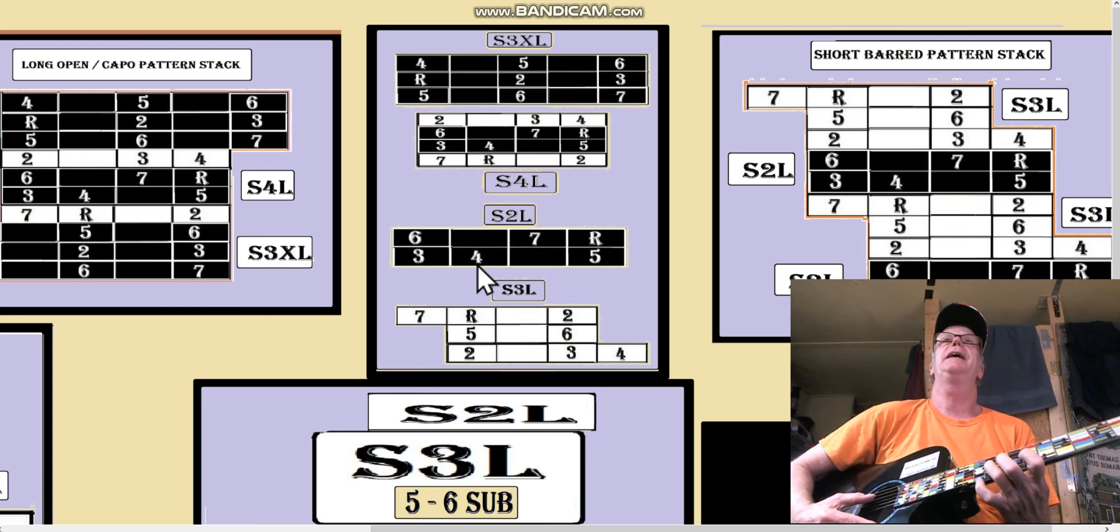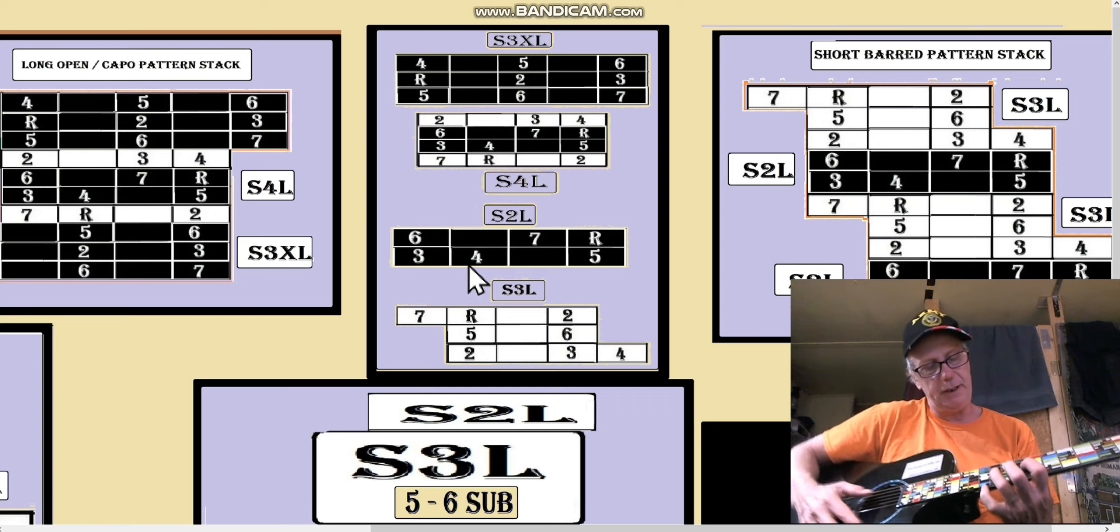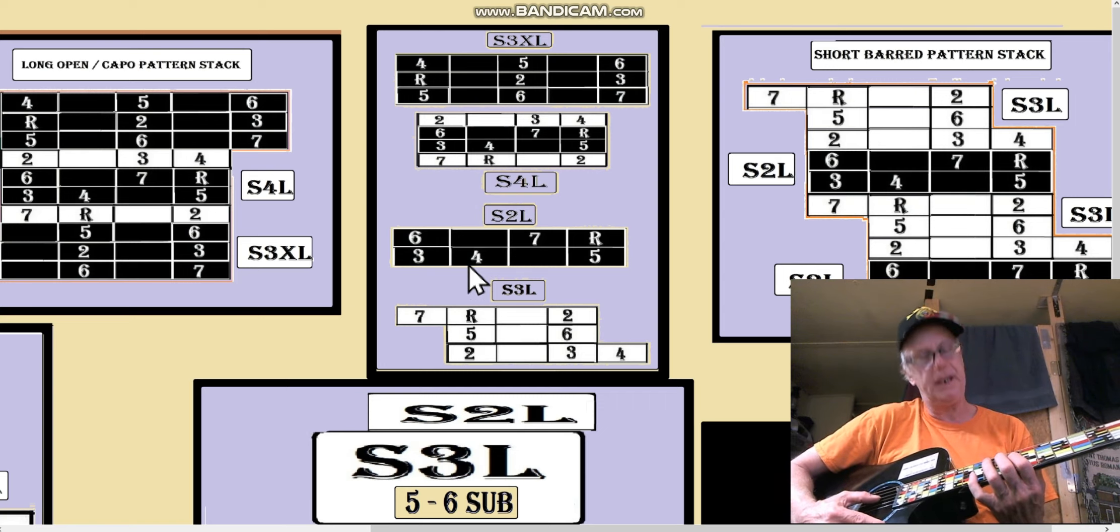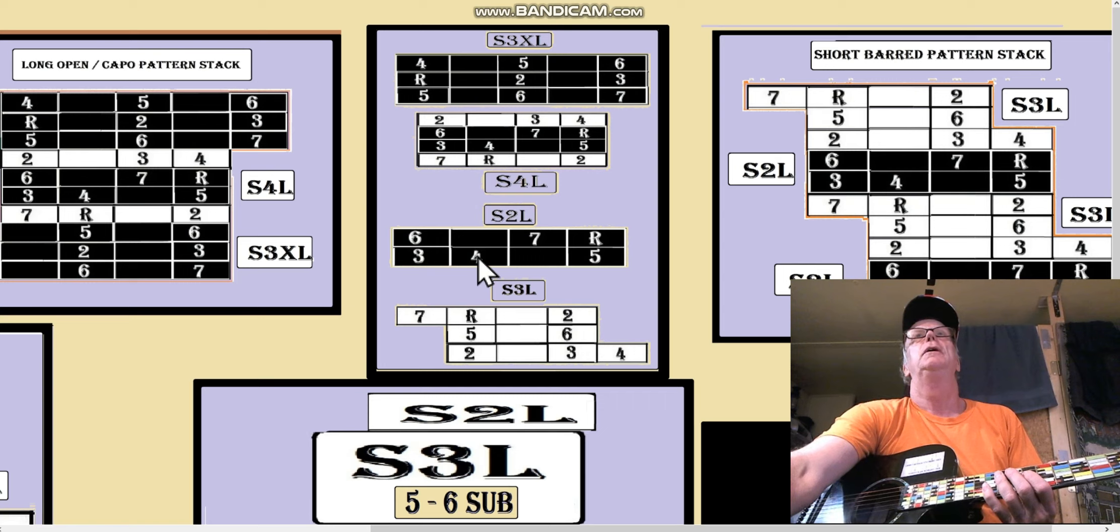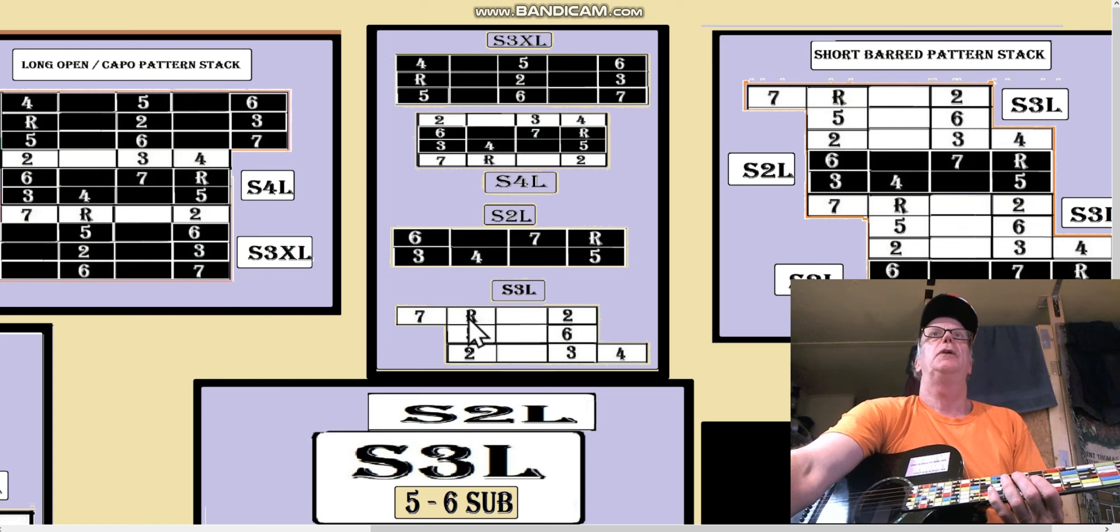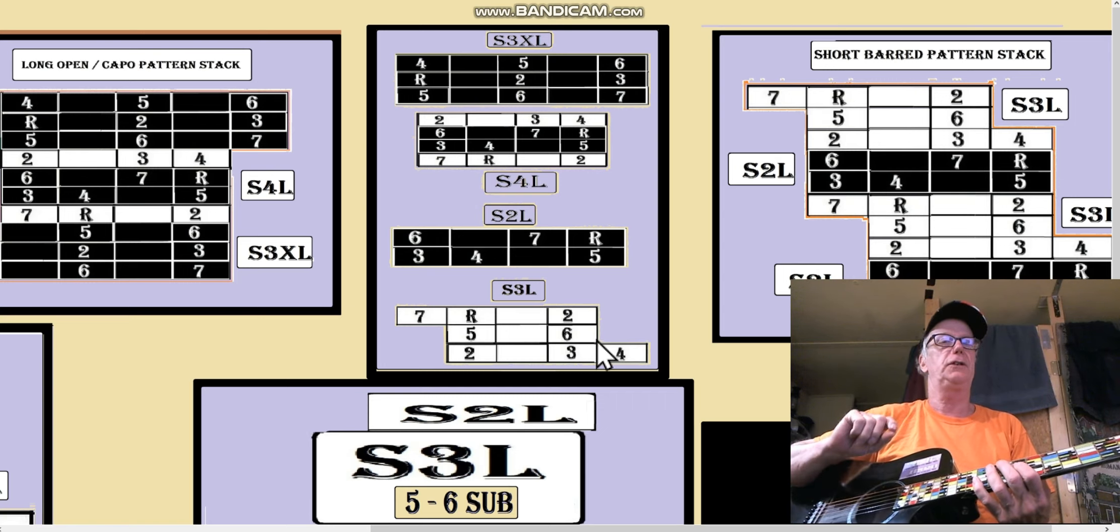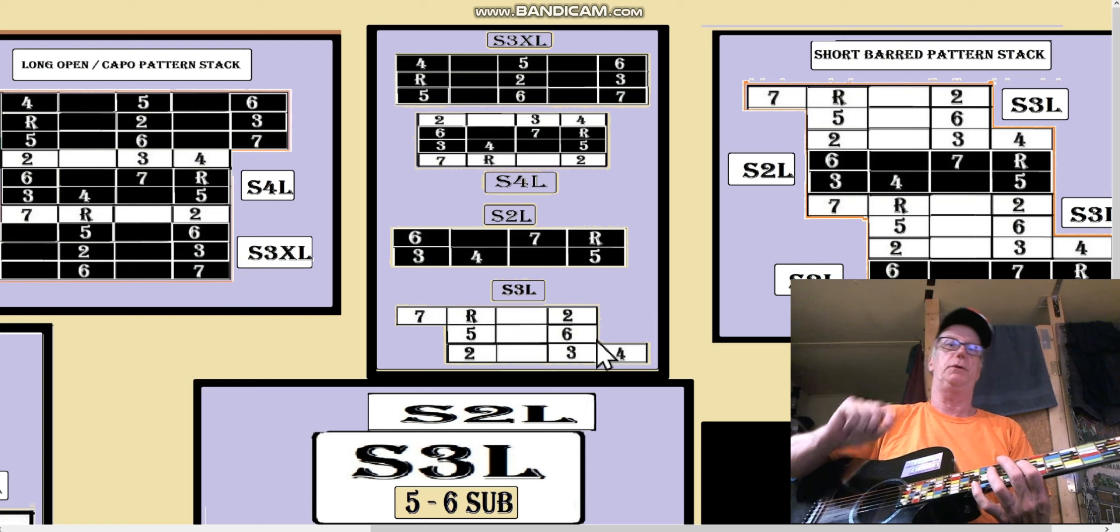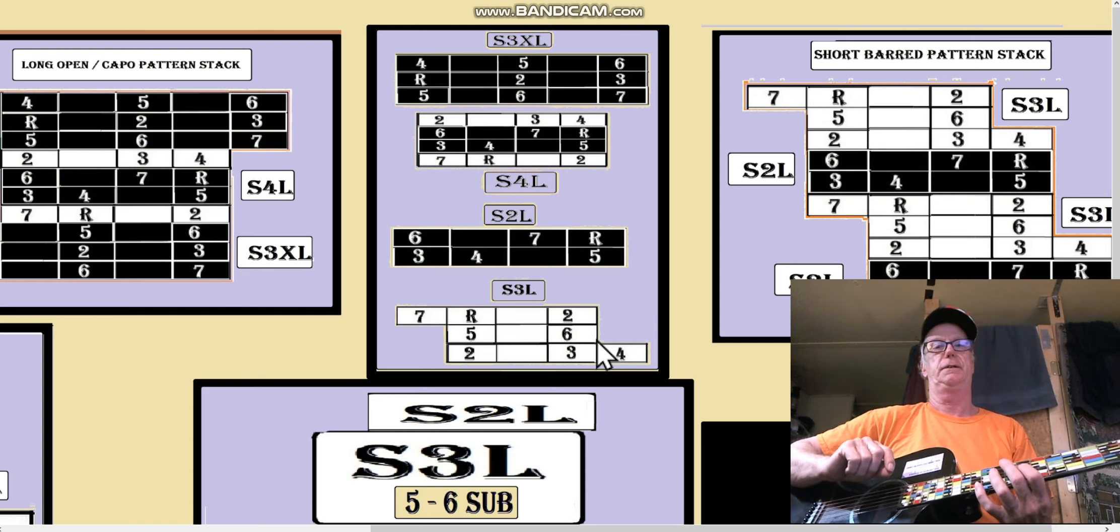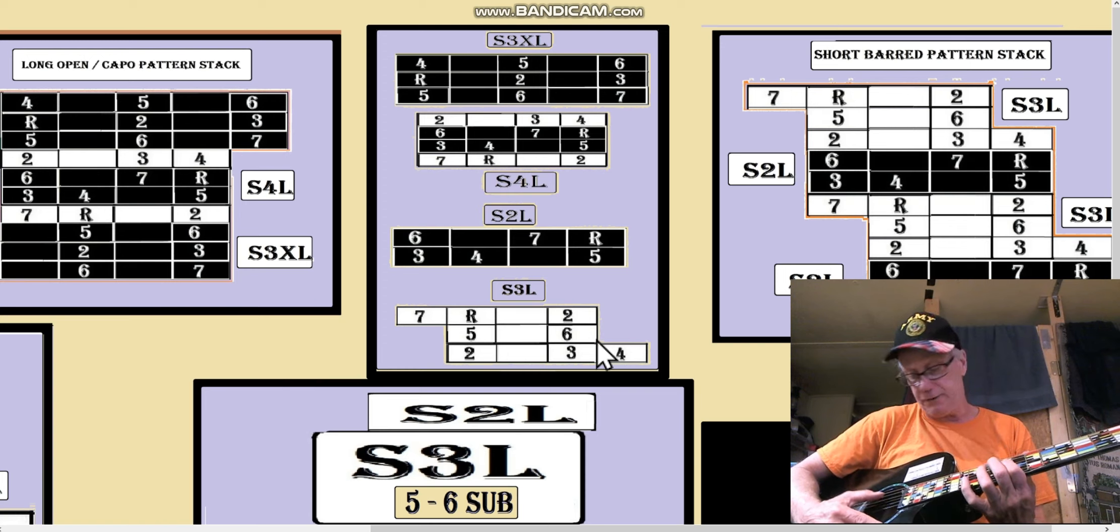All right, when you come down like this, just play around with it until you can find out are you on the three and the four or are you on the seven and the root. What really will help you find it is this five-six here. But that's not exactly what this technique is. I knew that already, I knew the five-six.